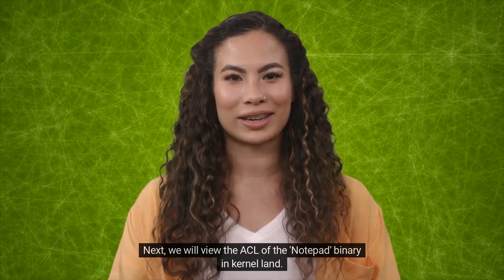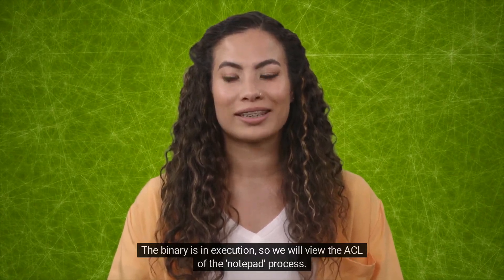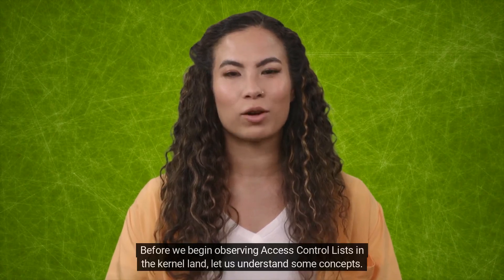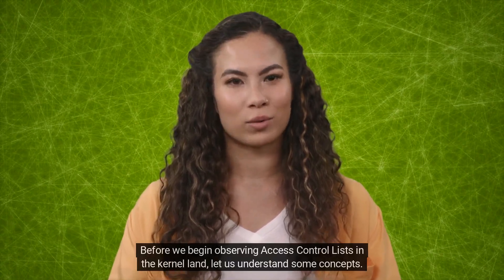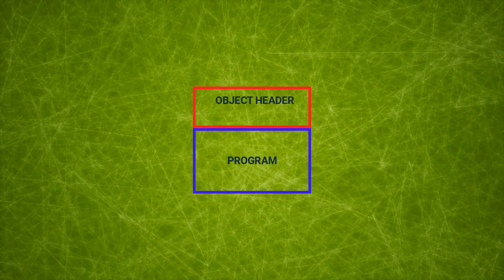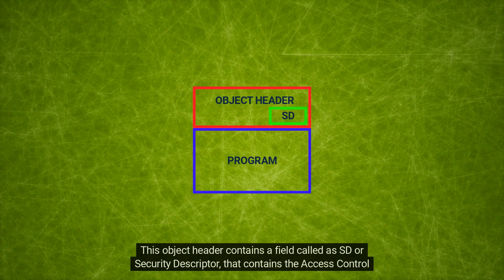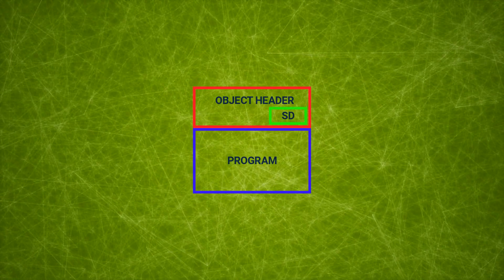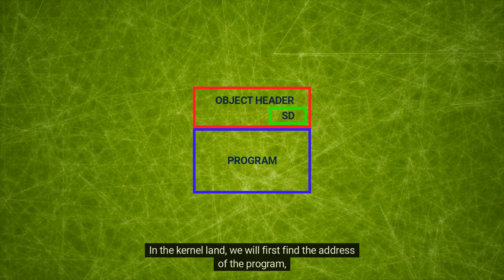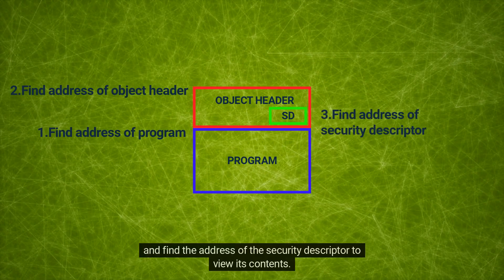Next, we will view the ACL of the Notepad binary in kernel land. Notepad is currently running on my computer — the binary is in execution, so we will view the ACL of the Notepad process. Before we begin, let us understand some concepts. When a program is in execution in the kernel land, an object header is added to it. This object header contains a field called SD, or Security Descriptor, that contains the access control list associated with that program. In the kernel land, we will first find the address of the program, then find the address of the object header, and find the address of the Security Descriptor to view its contents.